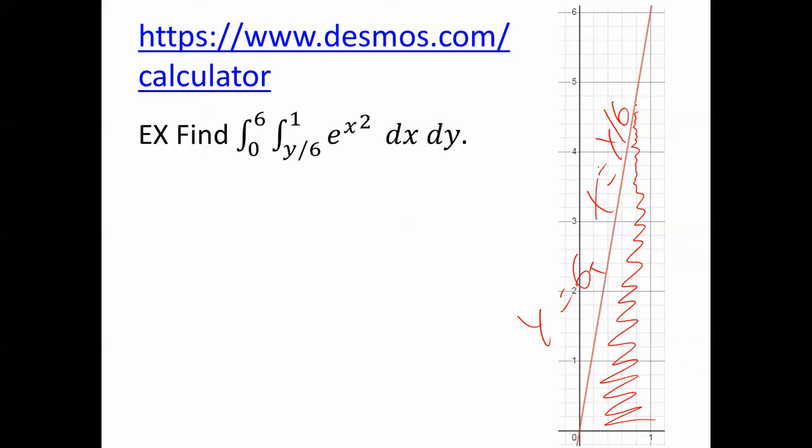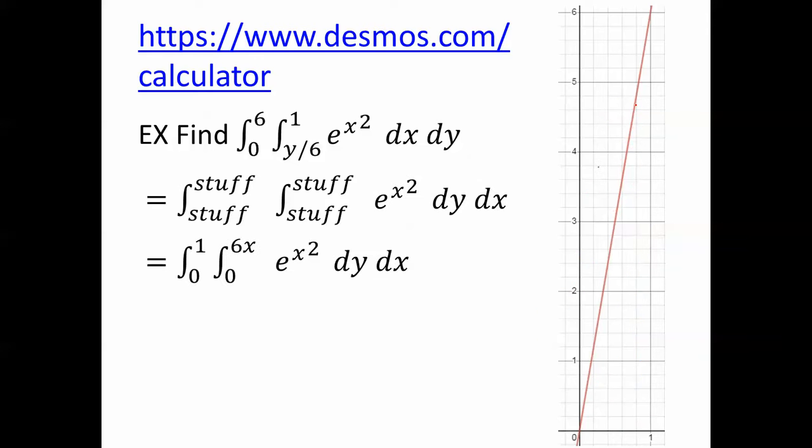So when we reverse the order of integration, the limits of integration will be different, but the integrand is the same. It's still e to the x squared, but we reverse it so that now it's dy dx. Here's the region we're integrating over in the xy plane. Notice that y is going to go from y equals 0 to y equals 6x, and then x simply goes from 0 to 1. So those are new limits of integration.